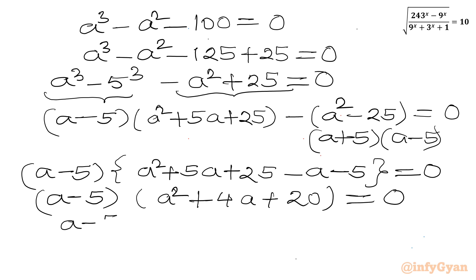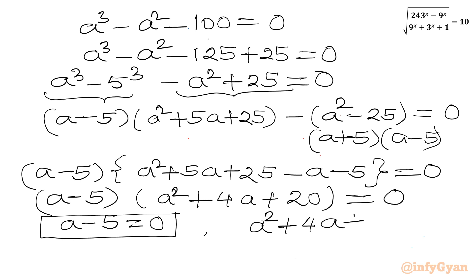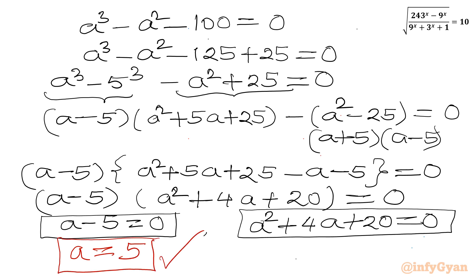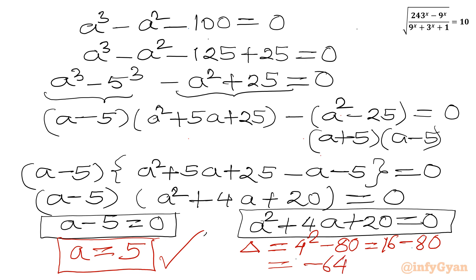Now a minus 5 is common. Factoring it out gives (a minus 5)(a^2 plus 4a plus 20) equal to 0. The first factor gives a equal to 5. Since a is positive, we accept this solution. For the second factor, the discriminant is 4^2 minus 4 times 20 equals 16 minus 80, which is negative 64. Discriminant is negative, generating complex solutions, so we reject this quadratic. Therefore the only accepted solution is a equal to 5.